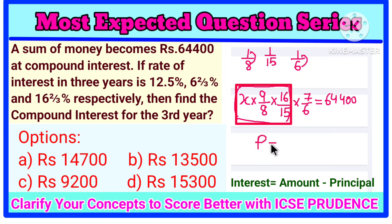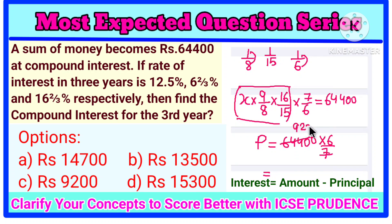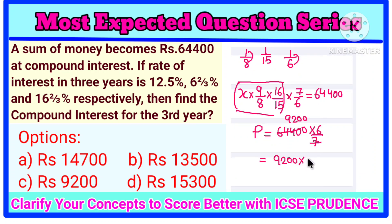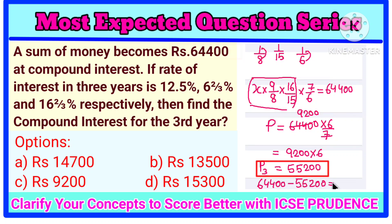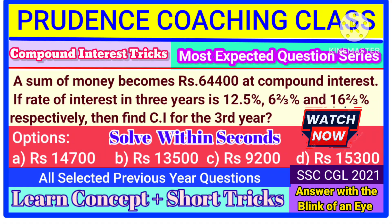So: P × 7/6 = 64,400. From here we get P = 64,400 ÷ 7 × 6. Dividing 64,400 by 7 gives 9,200. Then 9,200 × 6 = 55,200. Now, amount after 3 years (64,400) minus principal (55,200) gives the compound interest for the 3rd year only — that is Rs. 9,200. This is the final answer.